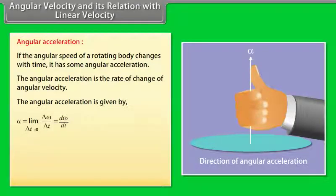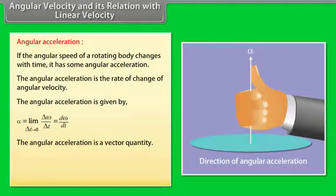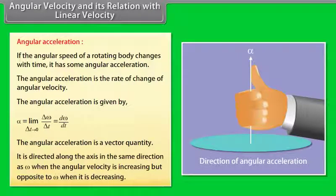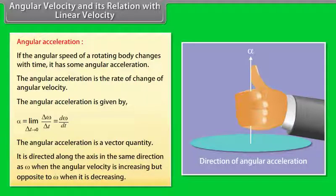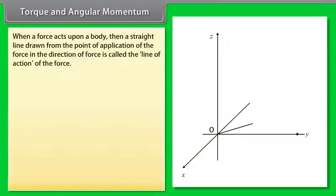The linear velocity v of a particle moving in a circular path of radius r is given by v = r·ω. If the angular speed of a rotating body changes with time, it has angular acceleration. The angular acceleration is the rate of change of angular velocity: α = limit(Δt→0) of Δω/Δt = dω/dt. Angular acceleration is a vector quantity, directed along the axis in the same direction as ω when angular velocity is increasing, but opposite when it is decreasing.